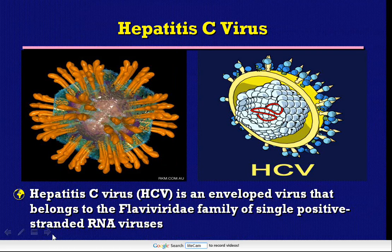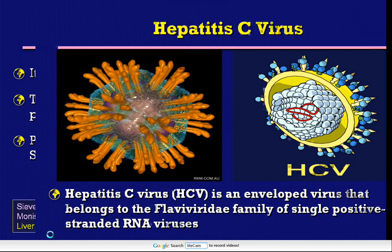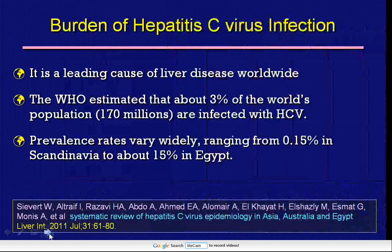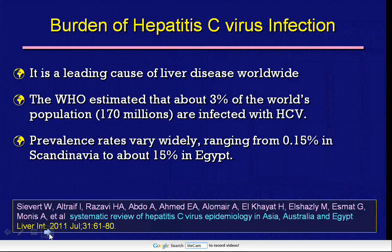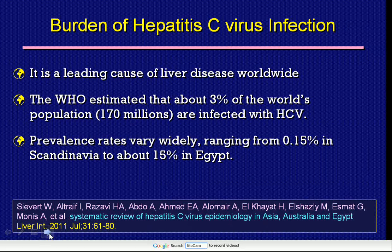Hepatitis C virus is an enveloped virus that belongs to the Flaviviridae family of single positive-stranded RNA viruses. It is a leading cause of liver disease worldwide. The World Health Organization estimated that about 3% of the world population are infected with chronic hepatitis C virus. Prevalence rates vary widely, ranging from 0.15% in Scandinavia to about 15% in Egypt.